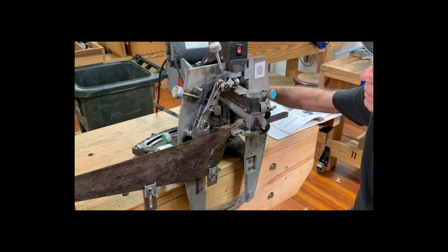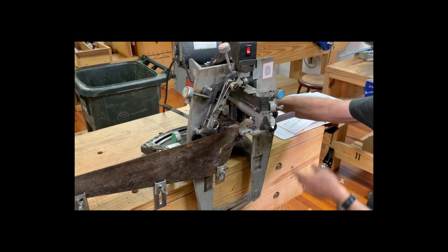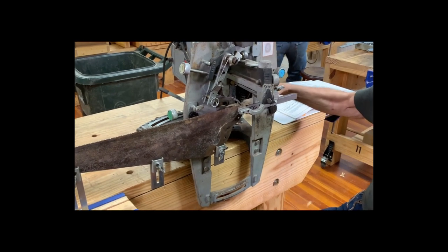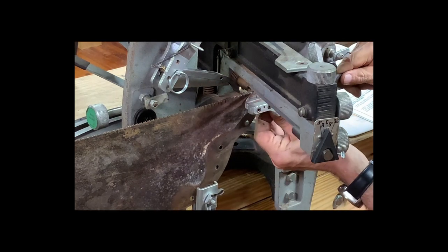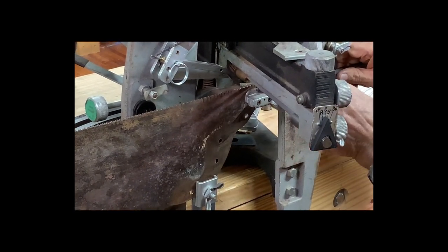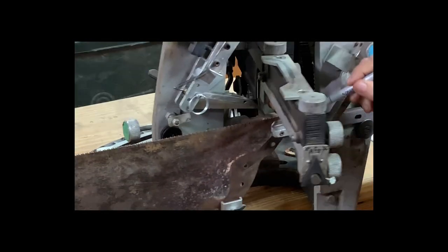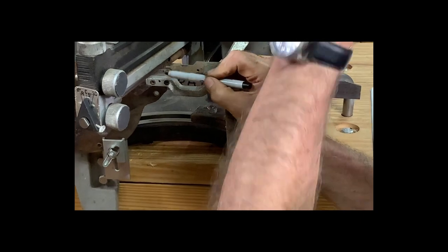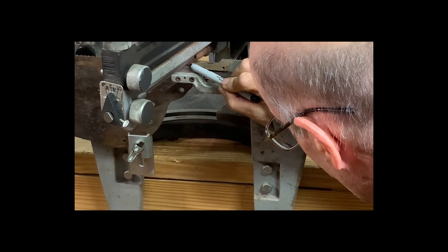Once you start wanting to file, this has a correct file in it for this size of saw. And in the manual it'll tell you which size file to use. I'm bringing the file around. And what I want to do is look down in here and try to get it centered and bottom on the mark. I need to get this in here.